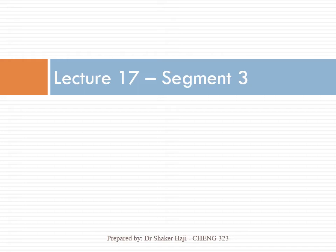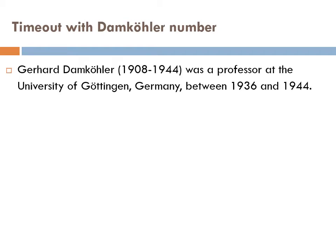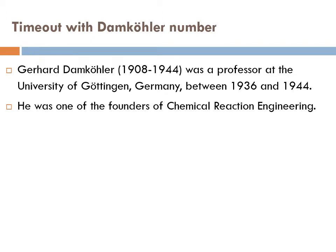Let's finalize lecture 17. In this segment, we're going to talk about the Damköhler number. Gerhard Damköhler, who lived a very short life, was a professor at the University of Göttingen, Germany, between 1936 and 1944. He was one of the founders of chemical reaction engineering.